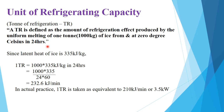One ton of refrigeration is defined as the amount of melting of one ton of ice from 0 degrees Celsius in 24 hours. The latent heat used is 335 kilojoules per kg.